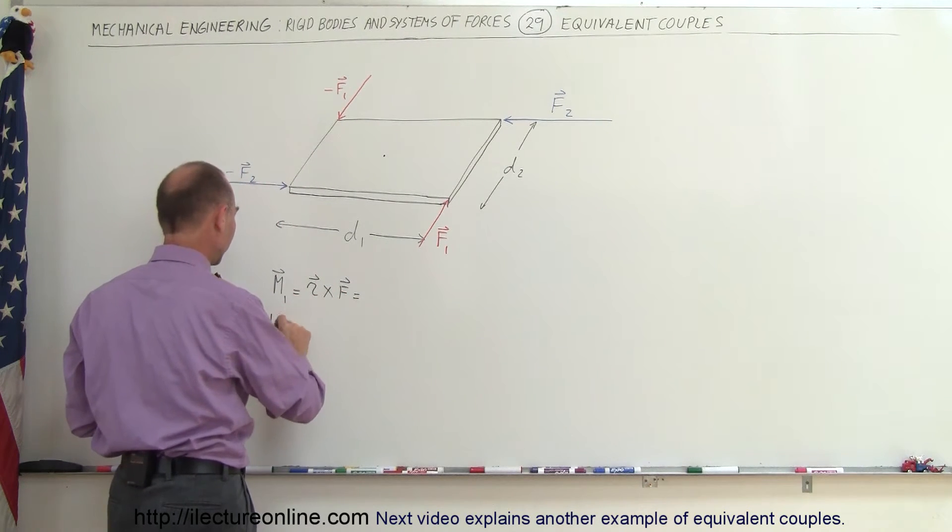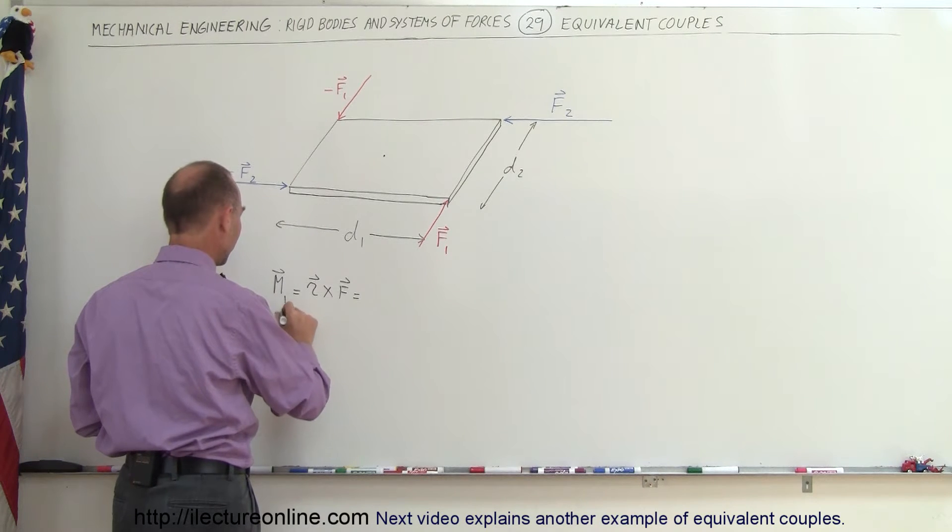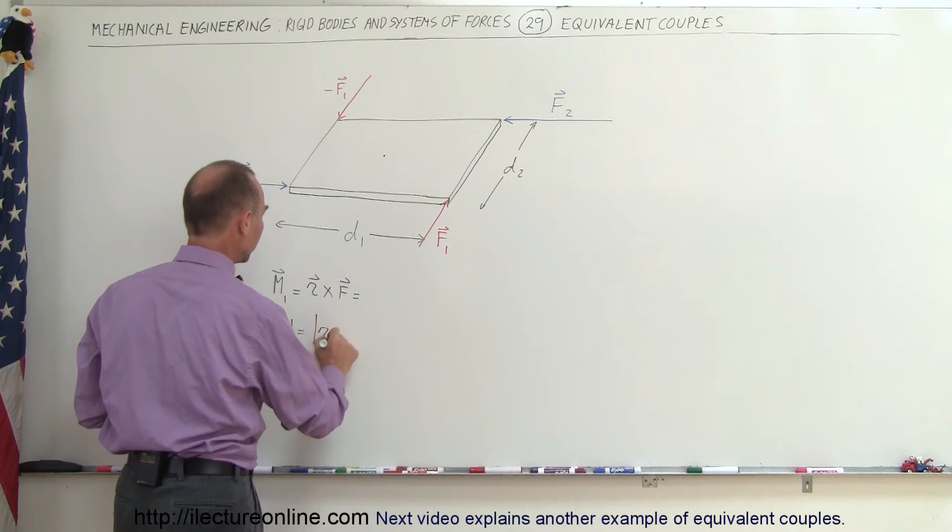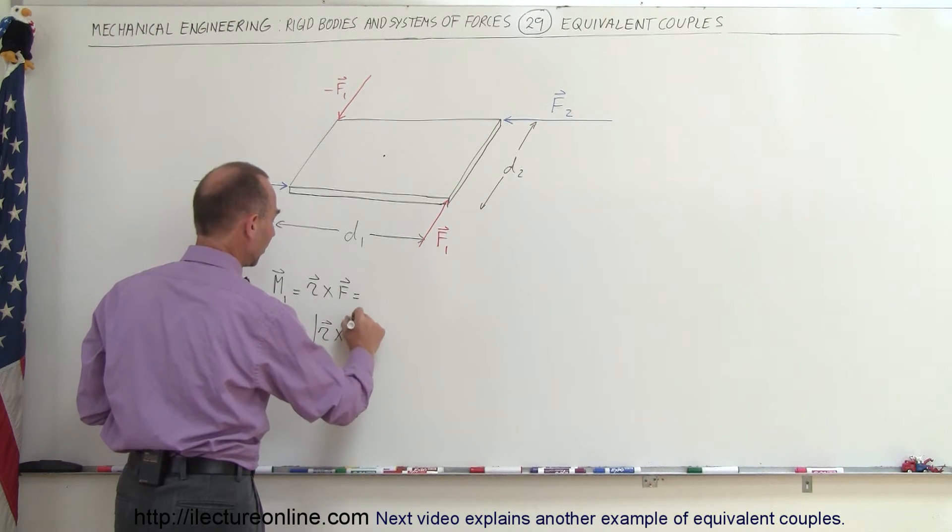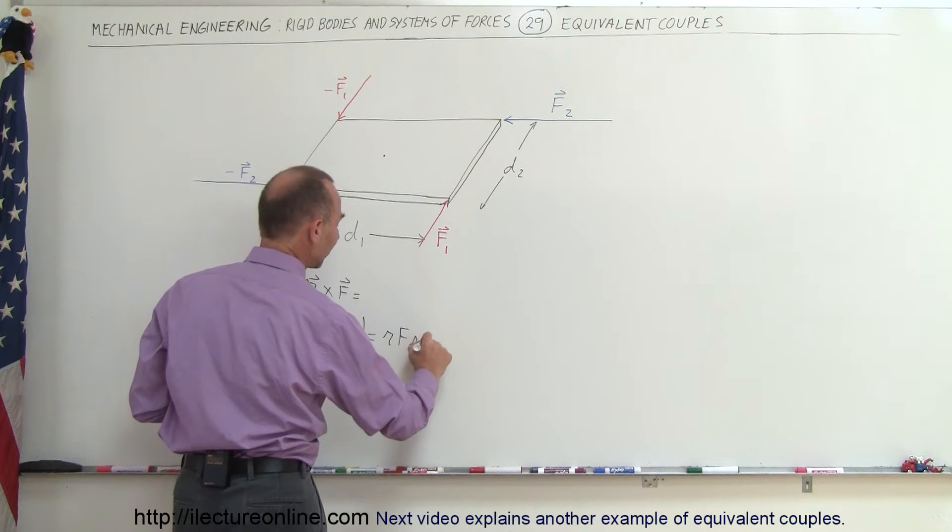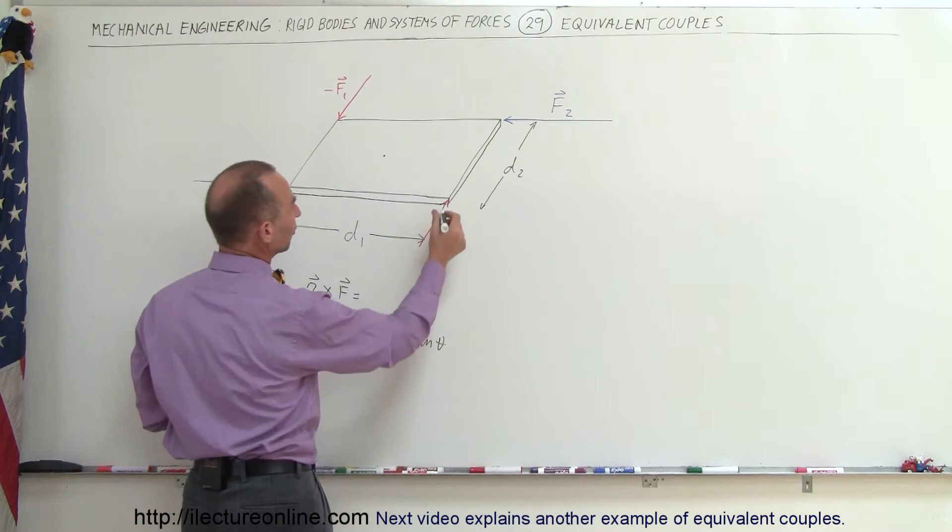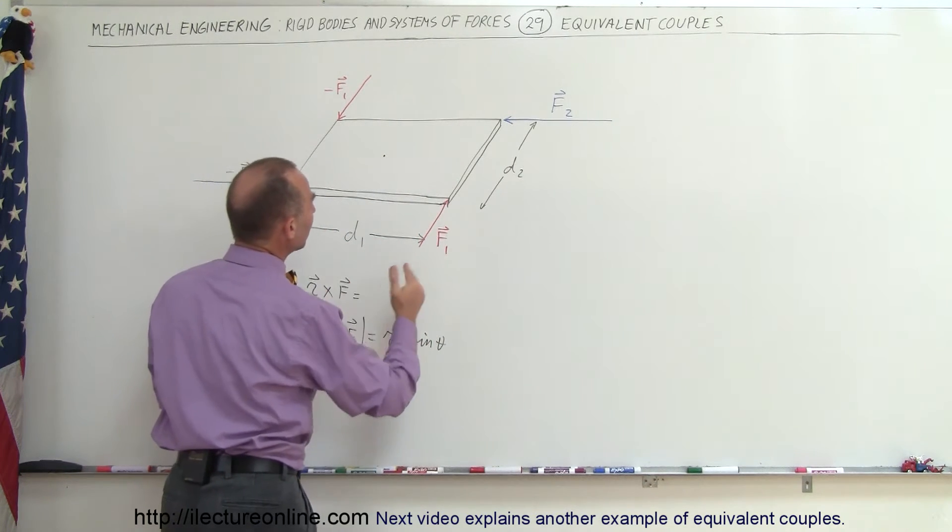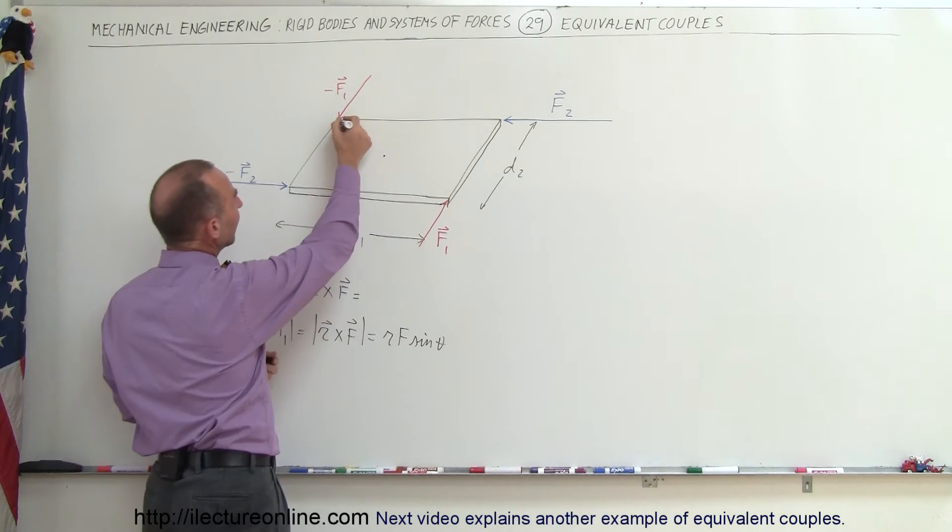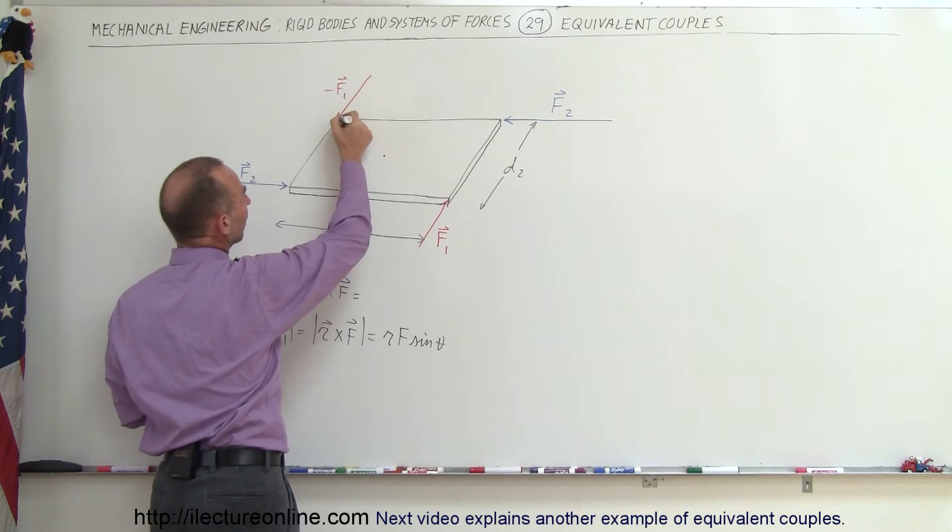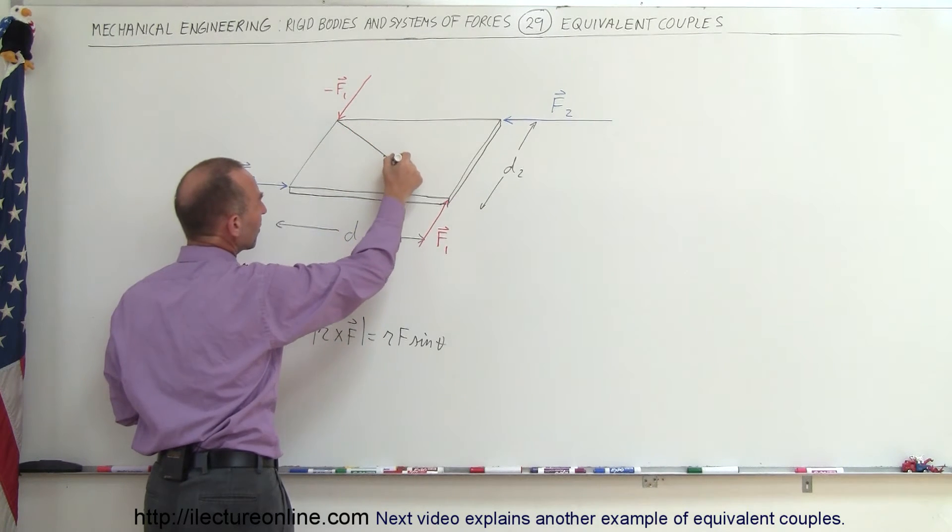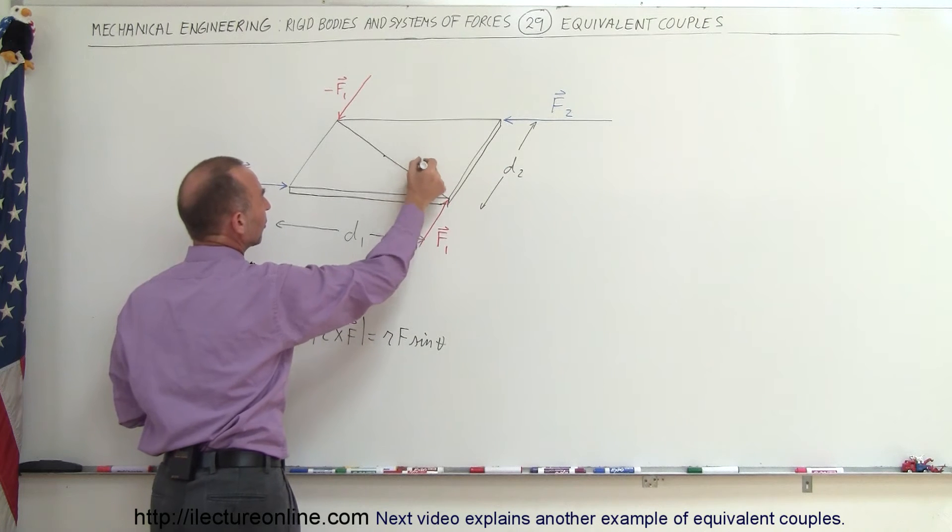That is going to be equal to the magnitude of R cross F, which is equal to R times F times the sine of the angle between them. That would be the angle between the, let's draw R. We go from the negative F from where it acts on this point to this point right there. So let's draw this R vector. So there's R vector.